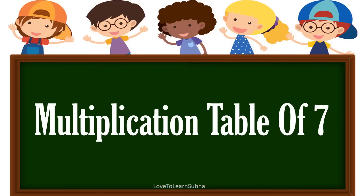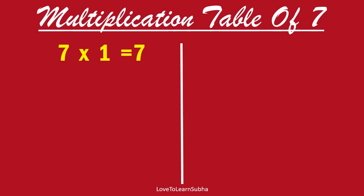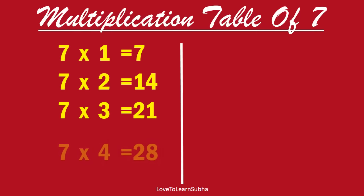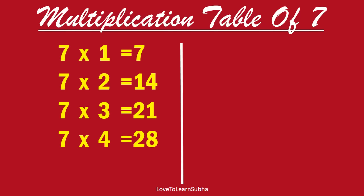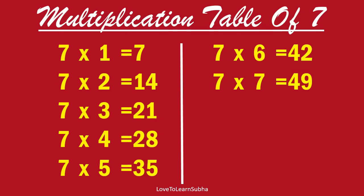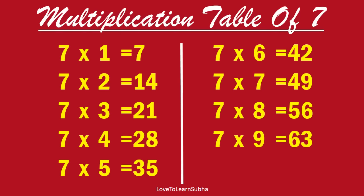Multiplication table of 7. 7 one is 7, 7 two is 14, 7 three is 21, 7 four is 28, 7 five is 35, 7 six is 42, 7 seven is 49, 7 eight is 56, 7 nine is 63, 7 ten is 70.